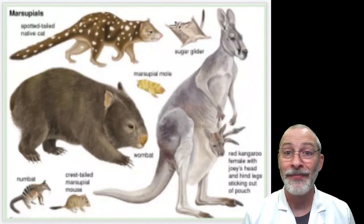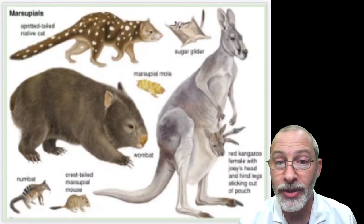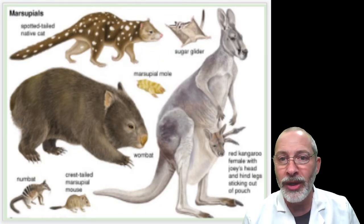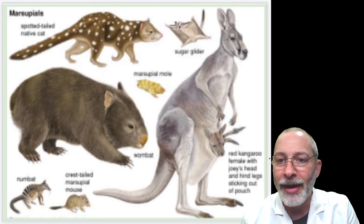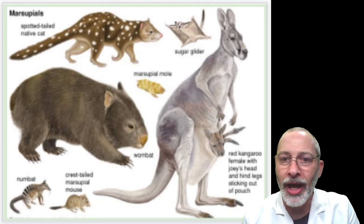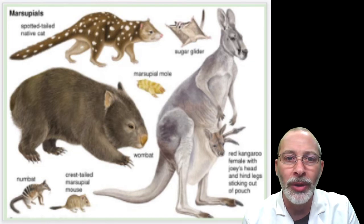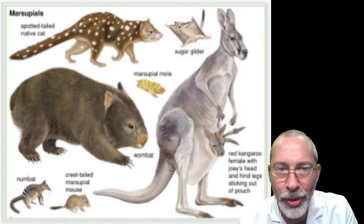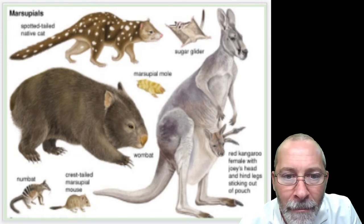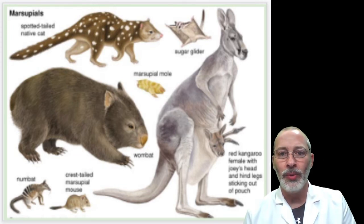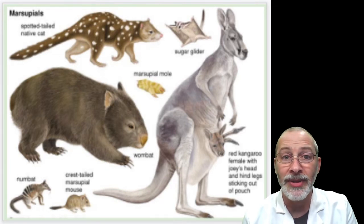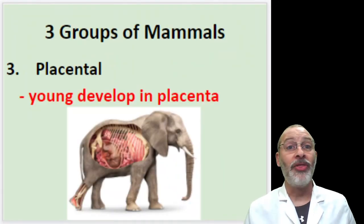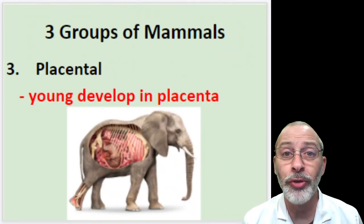Here are some more pictures: a red kangaroo with a joey — the name for a baby kangaroo — a sugar glider, the marsupial mole, the spotted-tail native cat native of Australia, the crest-tailed marsupial mouse, and the numbat. These are all Australian marsupials.